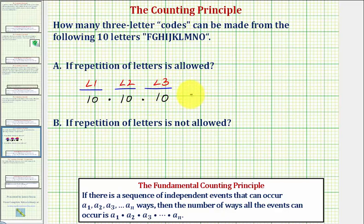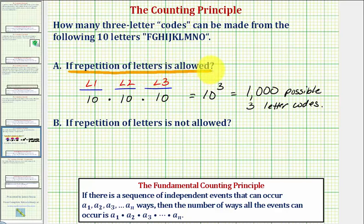And therefore this product, or ten to the third, tells us how many different three-letter codes we can make from these ten letters. Well ten to the third is equal to one thousand, so there are one thousand possible three-letter codes, again if repetition is allowed.